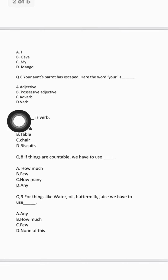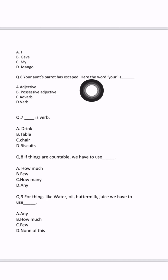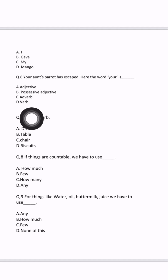Question number 6: 'Your aunt's parrot has escaped.' The word 'your' — mera, uska, unka — what are all these? We have to identify what the word 'your' is. Your aunt's — 'your' becomes a possessive adjective.